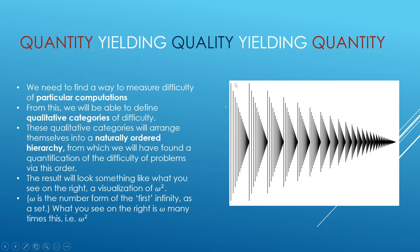This visualization here is of omega squared — omega times omega — where omega is the first limit ordinal. The way to visualize it is: we count to infinity, then count to infinity again and add that on, and do that infinity many times. You get something that looks like infinity times infinity. So this is a way to visualize omega squared.